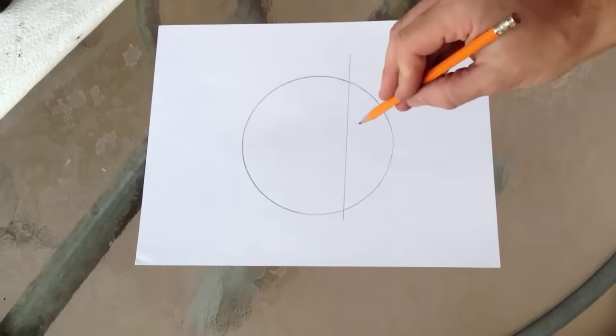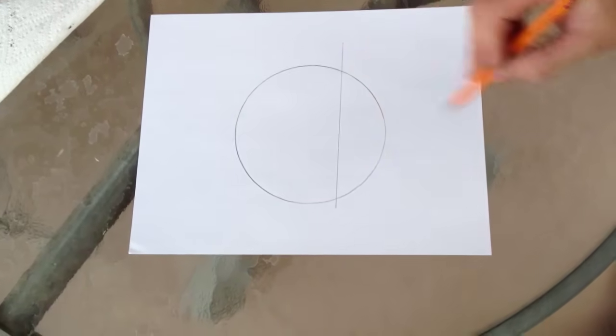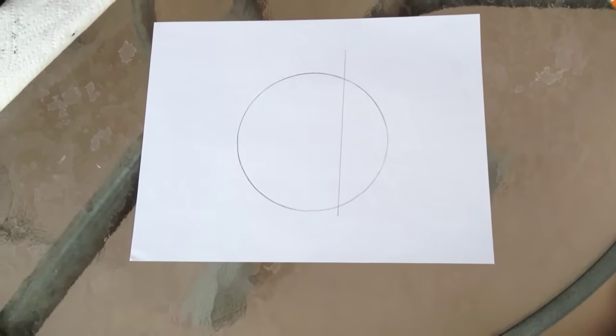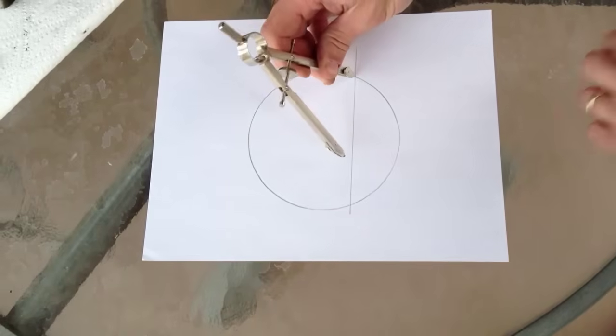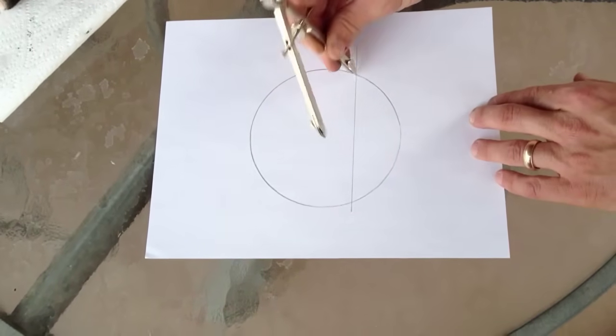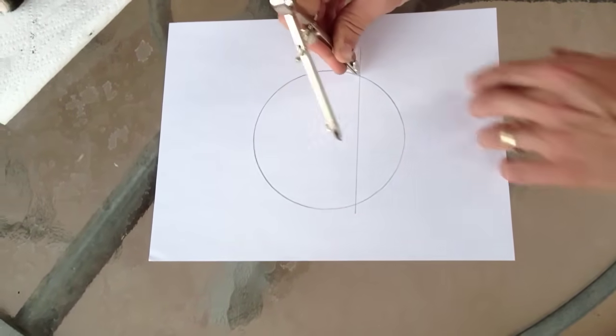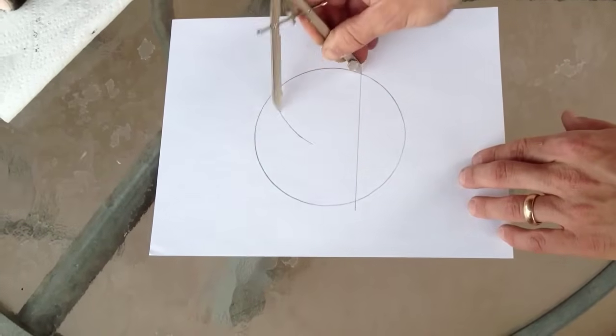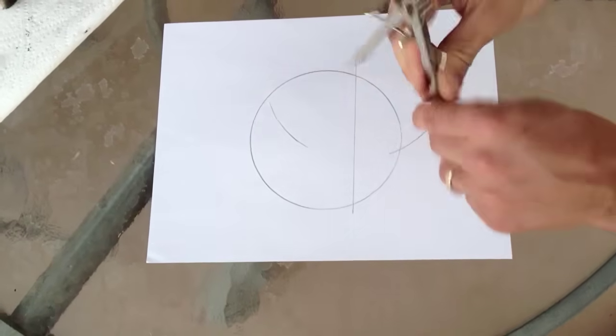Now you want to find the center of your cord and draw a line perpendicular. This is where your compass comes in. Set your compass so it's longer than half the distance of your cord. And with the point on where the cord crosses the circle, draw an arc above and below the line.